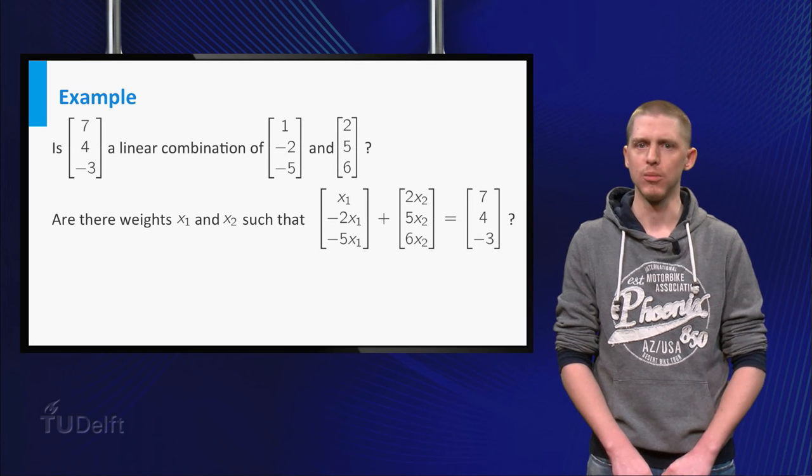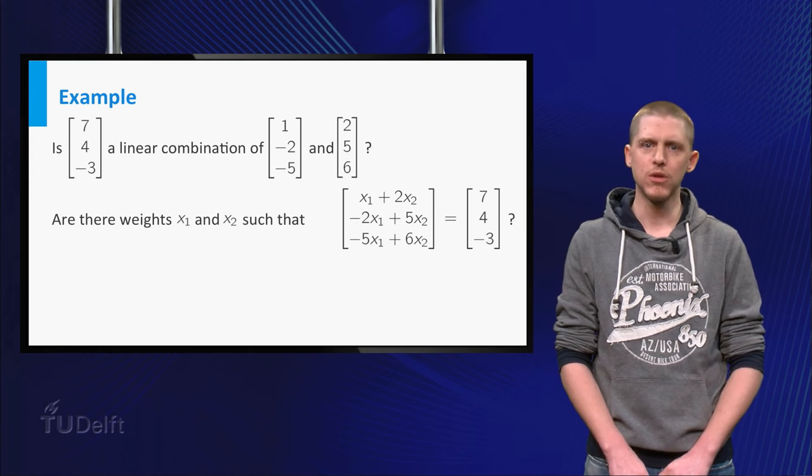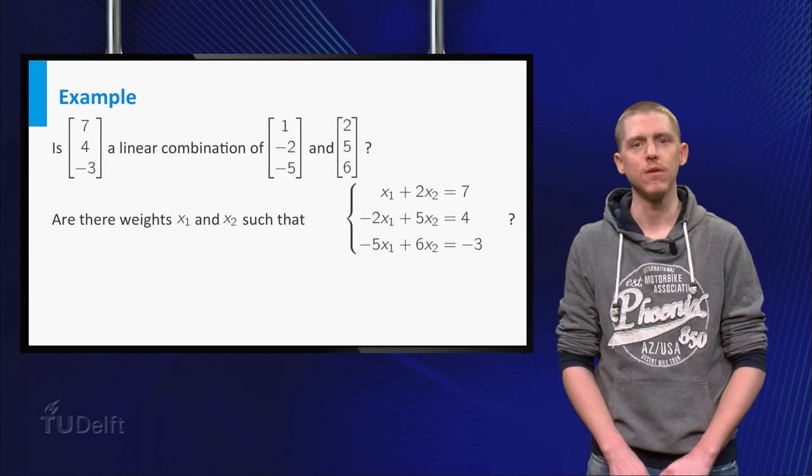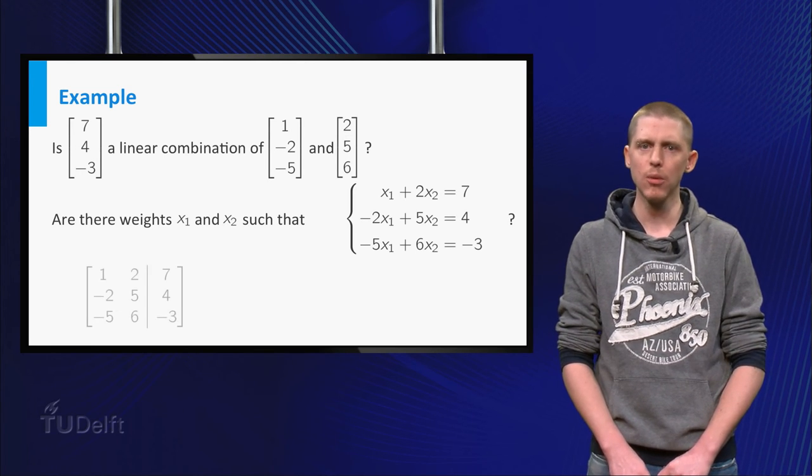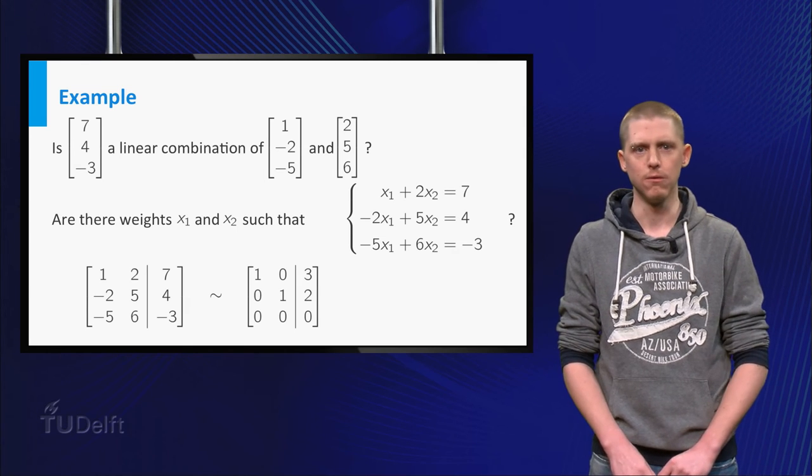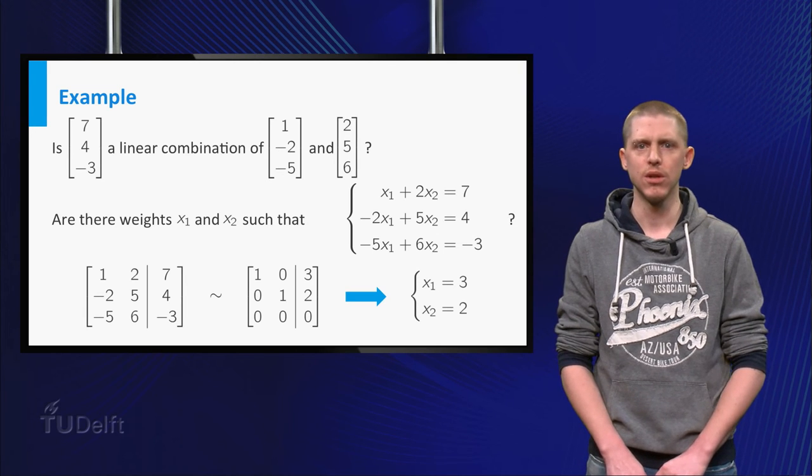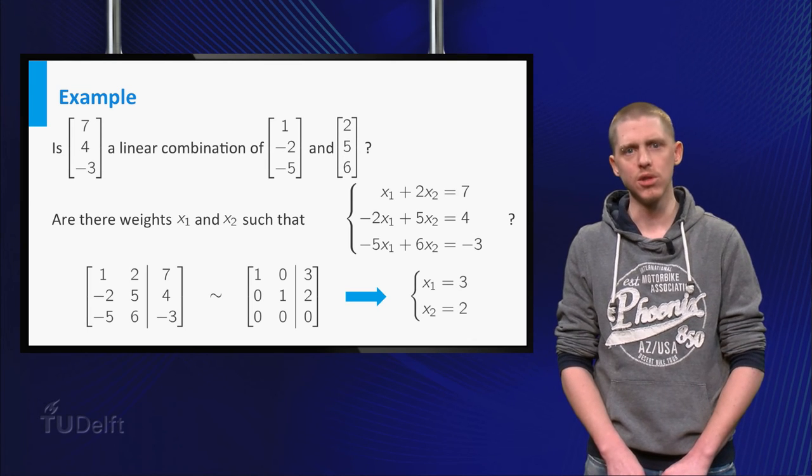First perform the scalar multiplication, then do the vector addition. Now we have two vectors which should be equal. But this can only happen if each component is equal, so we must solve the shown linear system. The augmented matrix of this linear system has the shown reduced row echelon form. This gives you that the solution to the initial equation with the three vectors should be x1 equals 3 and x2 equals 2.